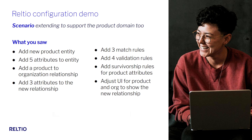Let's recap what we achieved in the last 10 minutes. We added the new product entity and a set of attributes including a nested attribute for product identifiers. We added a relationship to connect products to organizations, with attributes on that relationship. We added various match rules to identify duplicates including exact and fuzzy matching, a series of data validation rules to identify data quality problems as data is ingested, and a set of survivorship rules to control how we render data in real time based on source system contributions. Lastly, we modified the Realtio UI layout for both product and organization entities.